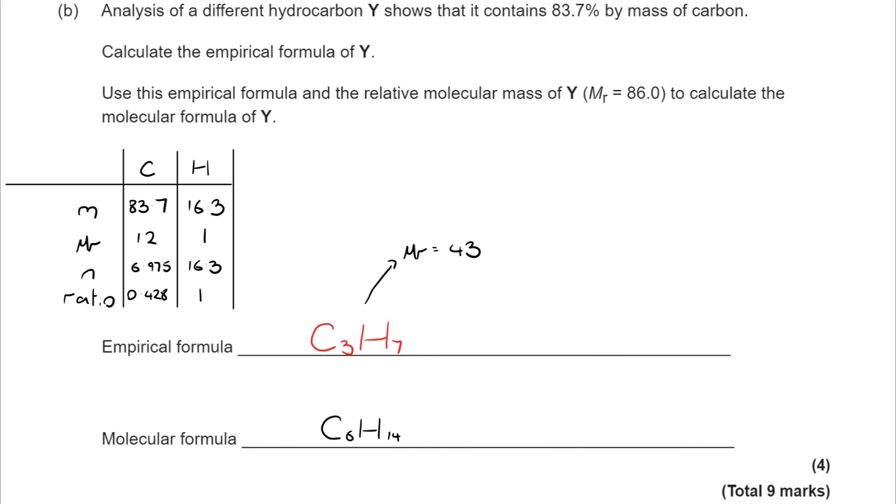Now if you struggled with the empirical formula, another way to think about this is what hydrocarbon would have an MR of 86. And you can work through the alkanes. That would get us to hexane here. And then you can work backwards to get to the 3 to 7 ratio. So there's different ways of tackling that question.